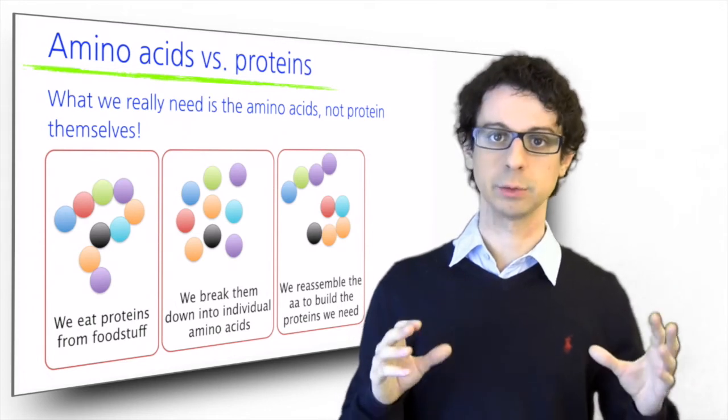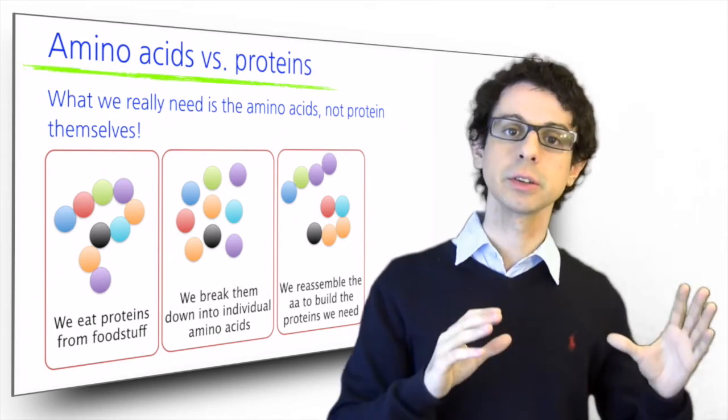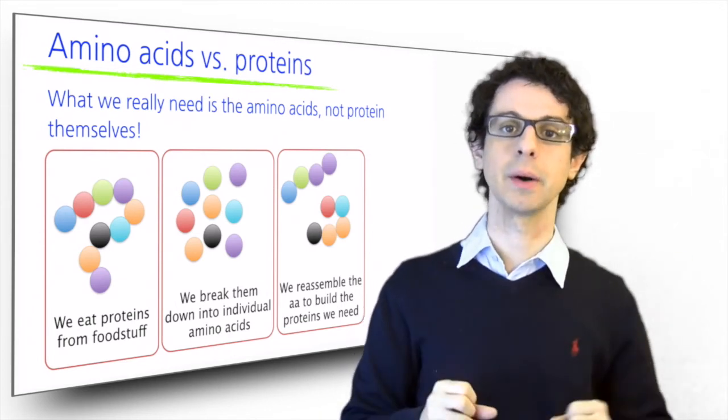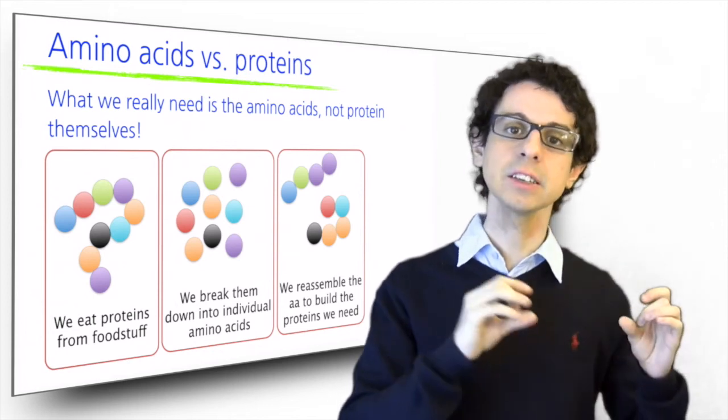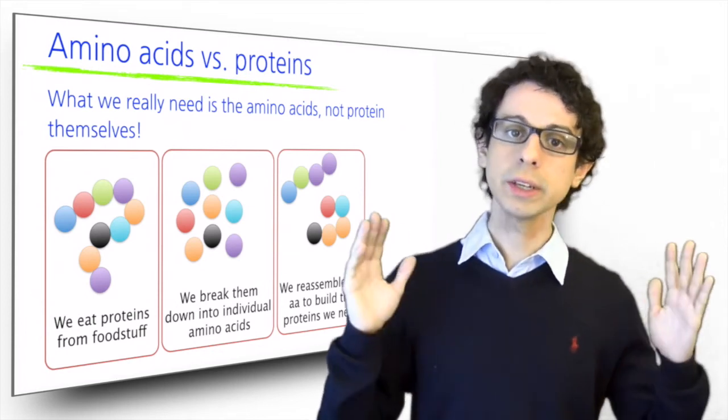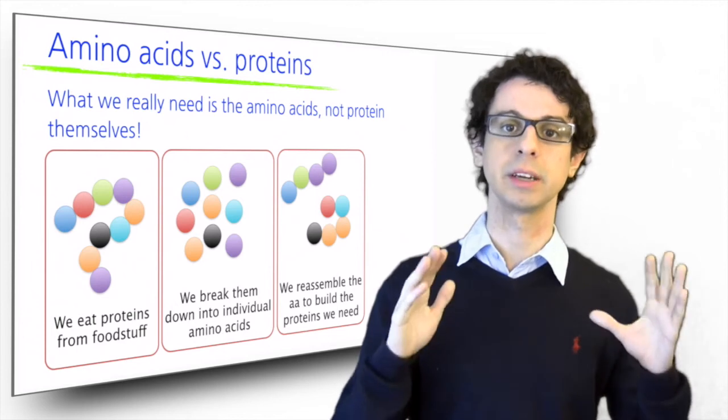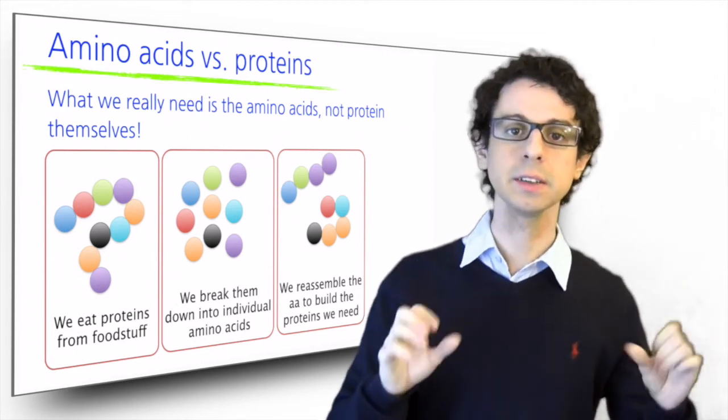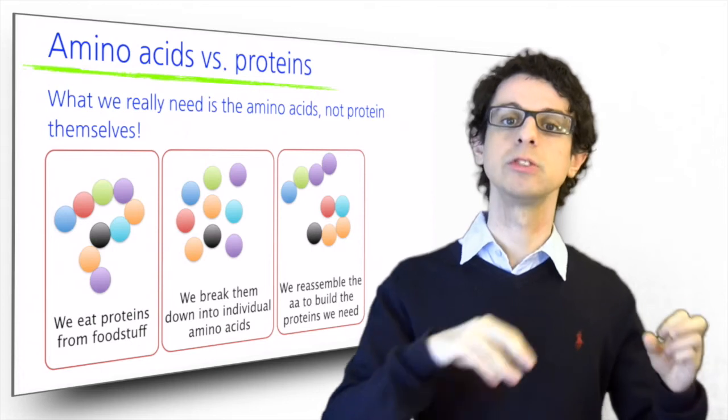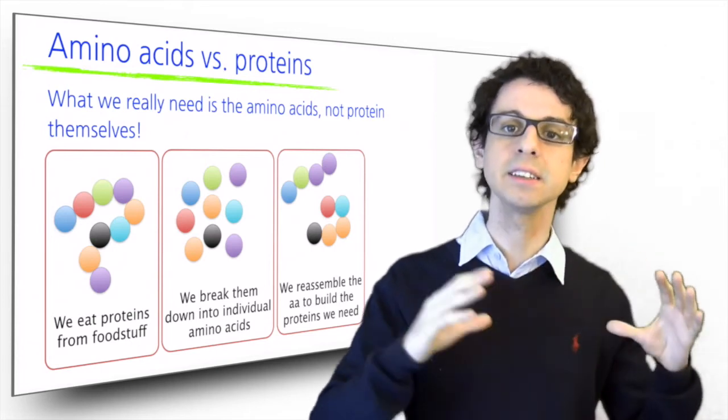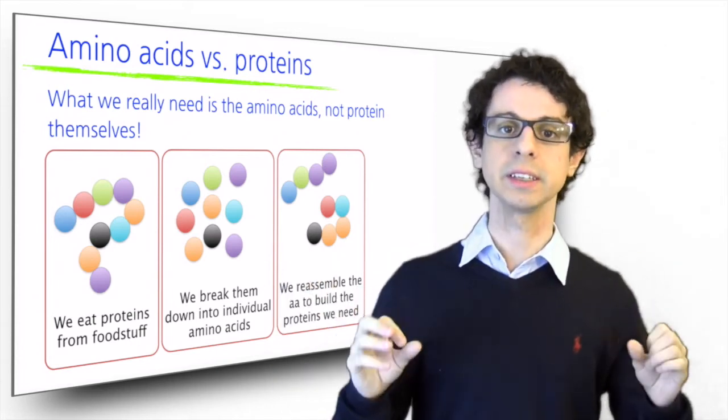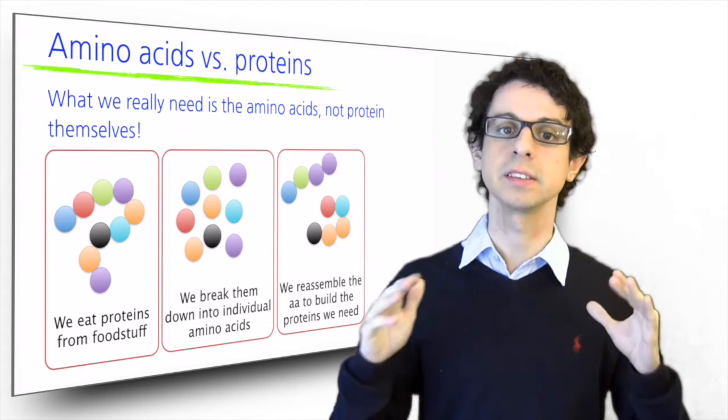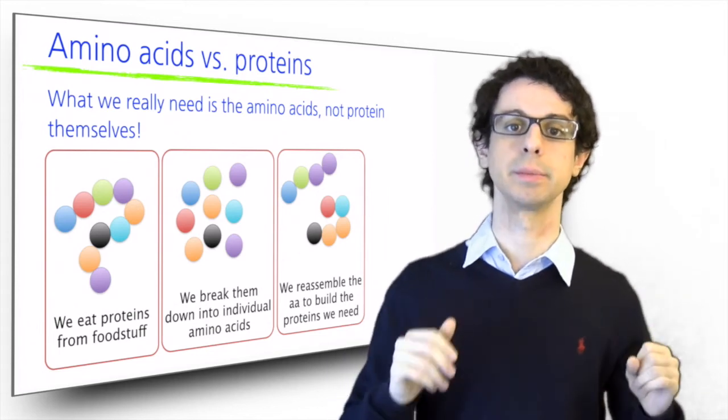This cartoon exemplifies what we just said. Each circle represents a different amino acid and as you can see they are linked together to make a protein with its biological function that is present in food. When we eat this protein we don't care about its function. We just take the protein and break it down all the way to its individual building blocks, the single amino acids that make the protein.